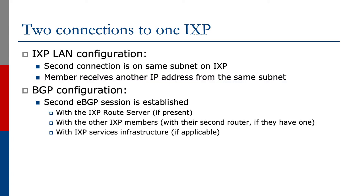The second connection for the IXP LAN is on the same subnet as the IXP. This is quite common in many internet exchange points, where quite often the exchange point would assign two or three IP addresses from the one subnet to each member.